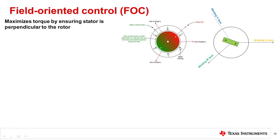Finally, the last control method is field-oriented control, or FOC. FOC is a PWM modulation technique that maximizes the torque in the motor by controlling the stator current so that it is always perpendicular to the rotor flux.